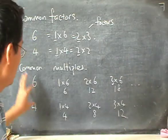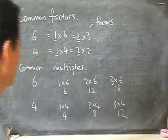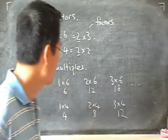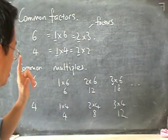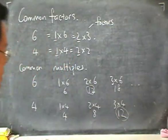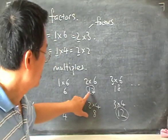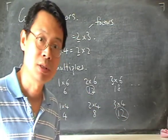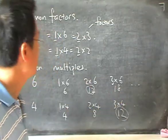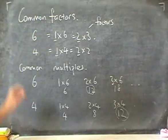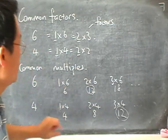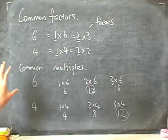So these are numbers that we can get by multiplying four by a whole number. If you look at these two sets of multiples, you see that they are mostly different. But notice that twelve is the same — it just so happens that we can find some multiples that are the same for both six and four. The multiples that are the same are called common multiples. So the word common just means multiples that are the same between the two numbers. And we say that twelve is a common multiple of six and four.